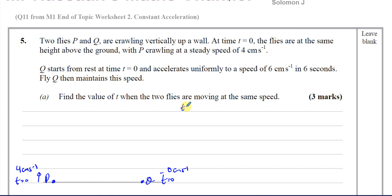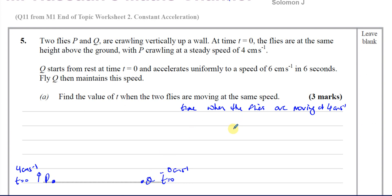So basically, we're asking to find the time when the flies are moving at 4 cm per second. We can consider Q because it's accelerating at a constant rate. It's easier for us to consider Q. We can find out the time at which Q reaches 4 cm per second, and we've answered the question.